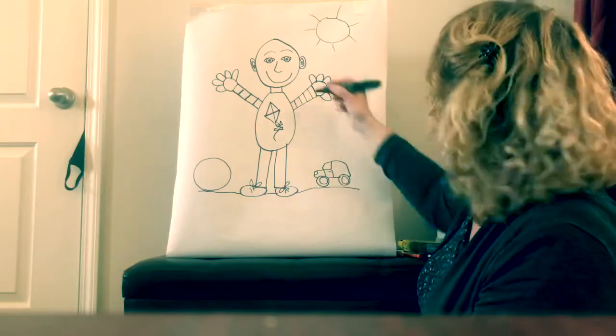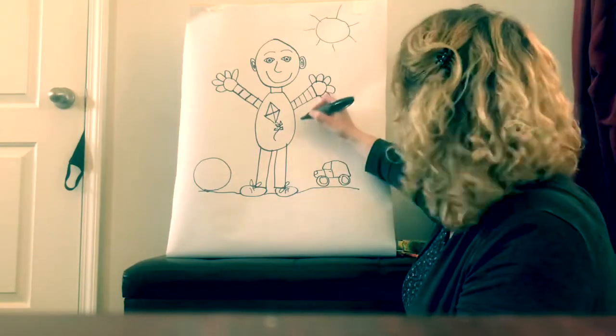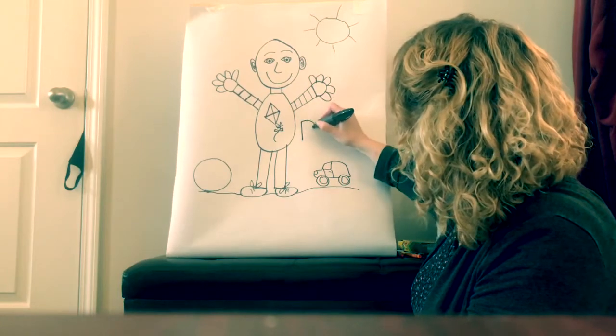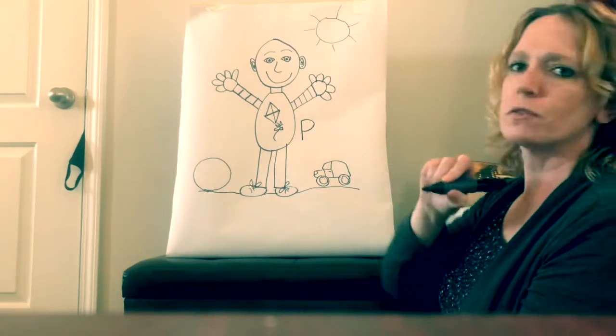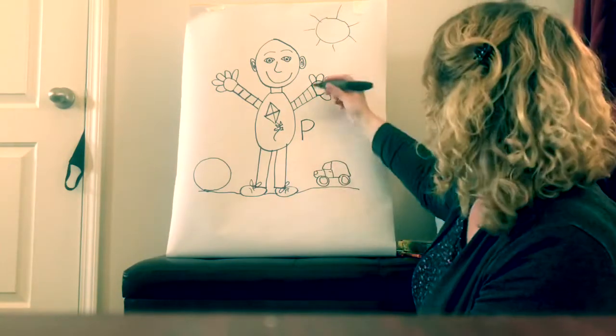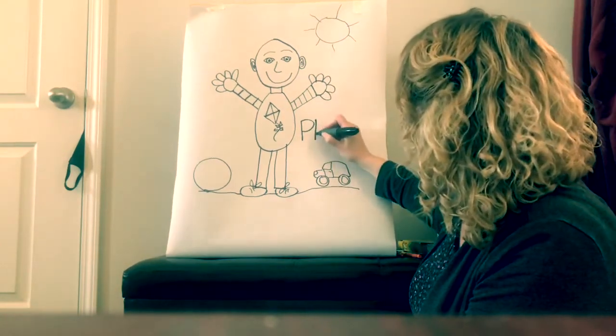Now I'm going to write his name. I need an uppercase P. So I'm going to make my uppercase P a line down. And then a half circle. Kind of like a backwards C up on the top. And I'm going to make a lowercase h, a lowercase y, a lowercase l.